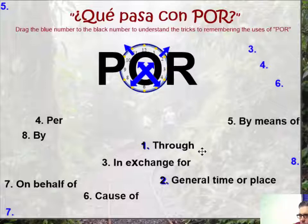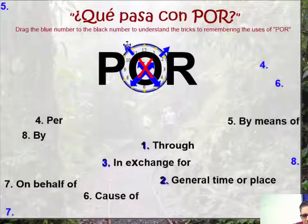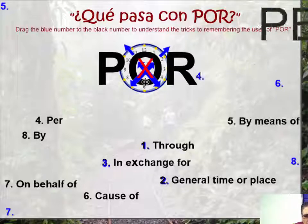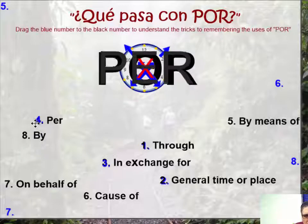Number 3: in exchange for. For example, I'll give you $5 in exchange for that used book — tres dólares por tu libro usado, or I'll give you $10 por la camisa. It's an exchange, so we use por. Notice the blue lines form an X, which reminds us of exchange. Number 4: per. If you're talking about the speed limit — 90 km por hora — the word por and per look so much alike, so that's an easy one to remember.